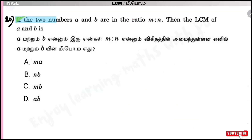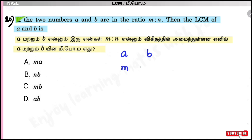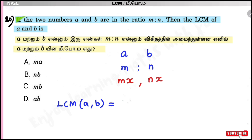Question number 20: If two numbers A and B are in the ratio m:n, find the LCM of A and B. Let the two numbers be mx and nx. Then the LCM of A (which is mx) and B (which is nx) is m×n×x.